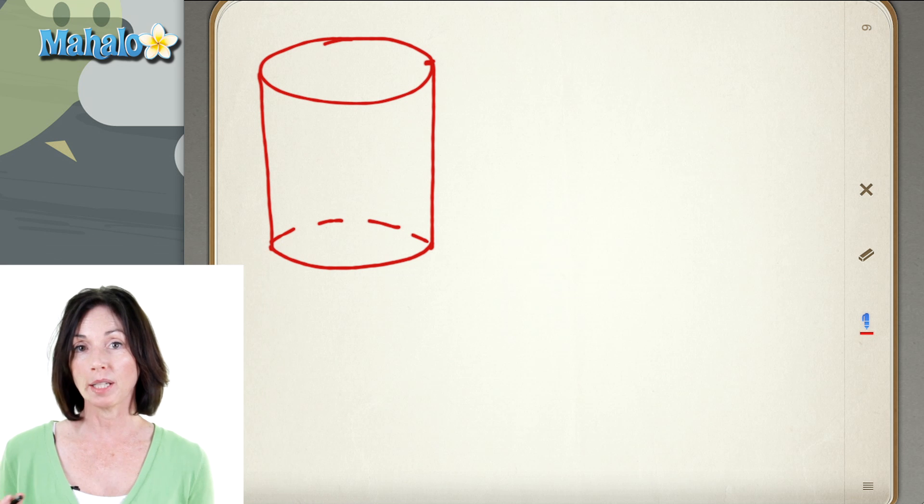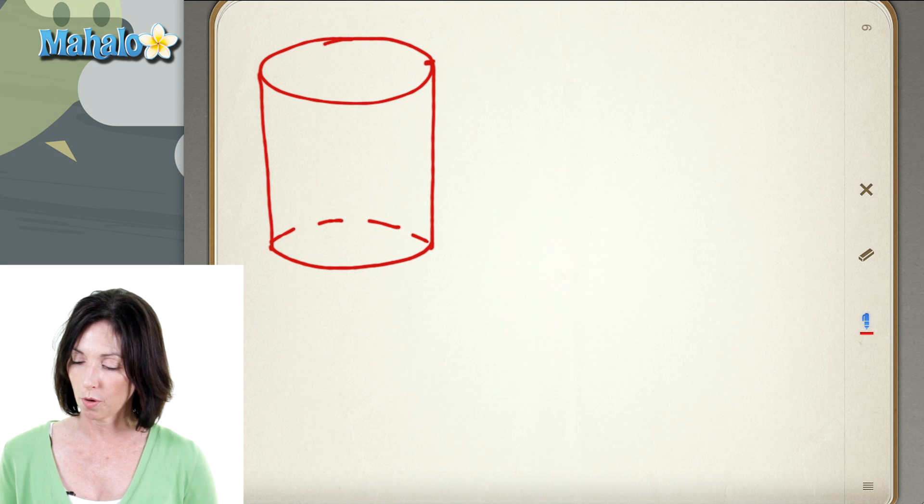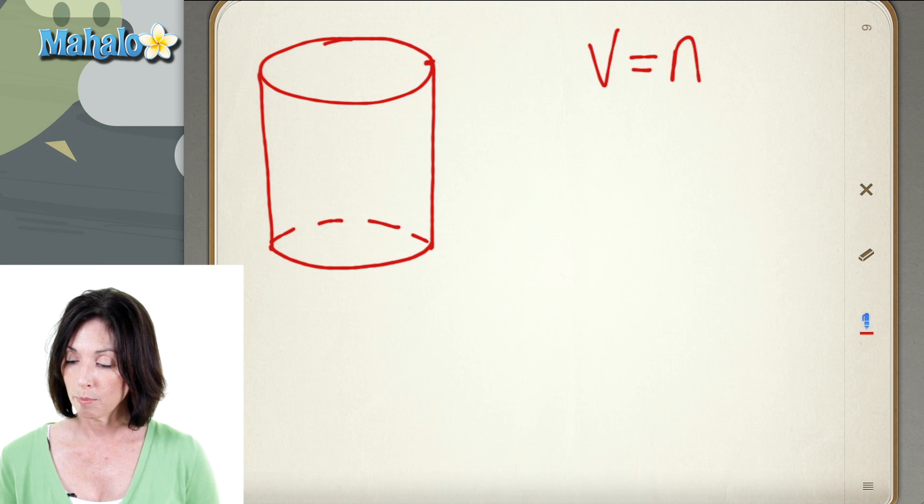A cylinder is a three-dimensional object, and it has a pretty standard volume formula. The volume is equal to the area of the base multiplied by the height.